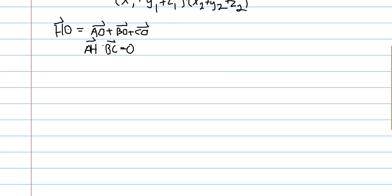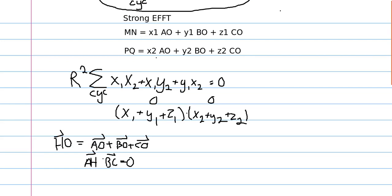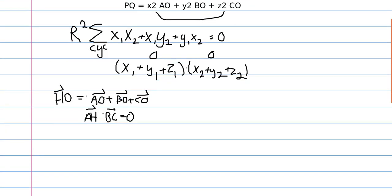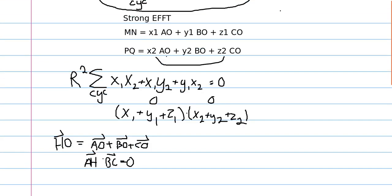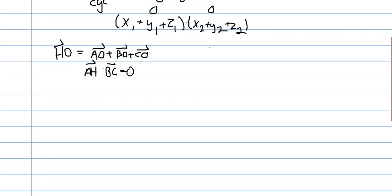So, anyway, yeah, so we can express the orthocenter as a vector in this form, where x1, or I guess, the ones I underlined, x2, y2, and z2 are all equal to one. They don't sum to zero, but as long as this vector has coordinates that sum to zero, then we can use strong EFFT, and it's very helpful.